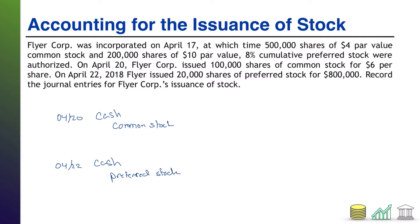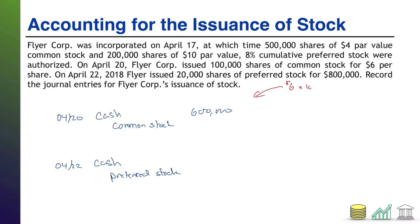We'll start with the 20th, where we are issuing the common stock. It tells us we issue 100,000 shares of common stock for $6 per share. So 100,000 shares times $6 per share means we are getting total cash of $600,000. A common mistake I see students make is they will then say common stock $600,000 — and that is not correct in this problem.